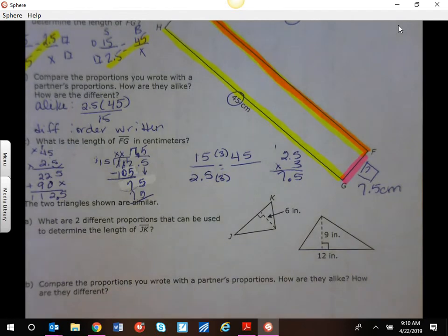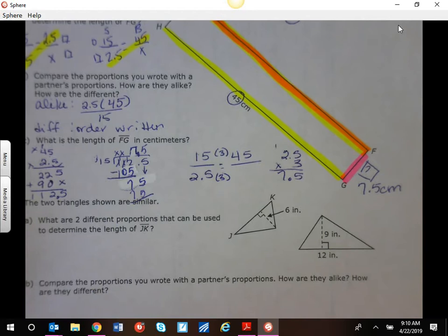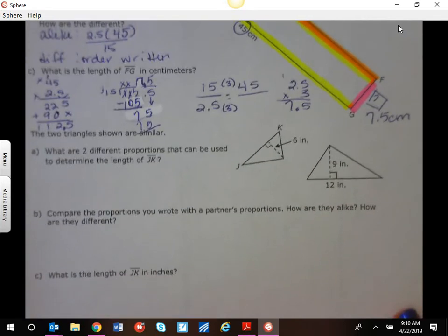Remember, cross-multiply-divide will work 100% of the time. There's not always a nice scale factor. So here we can do the same thing.